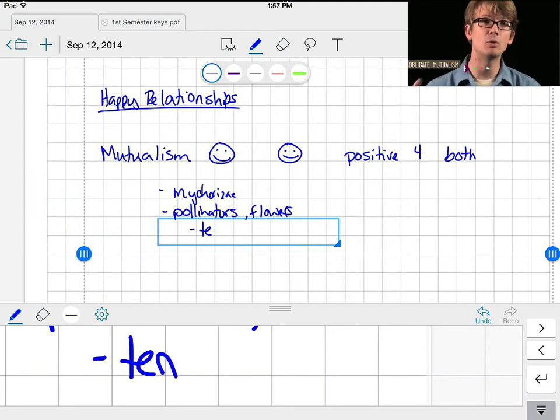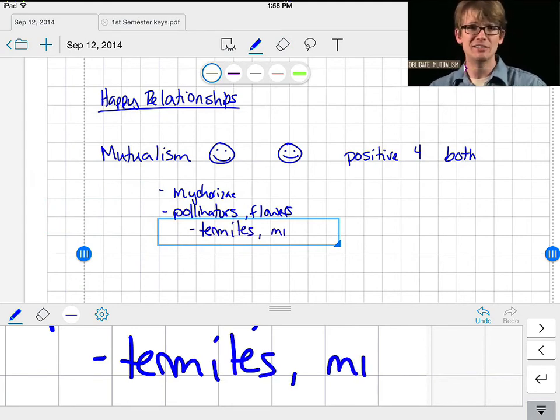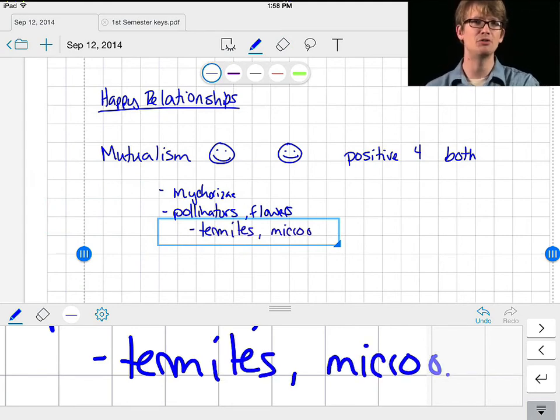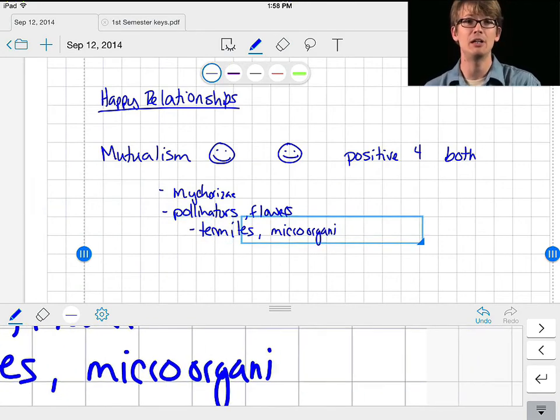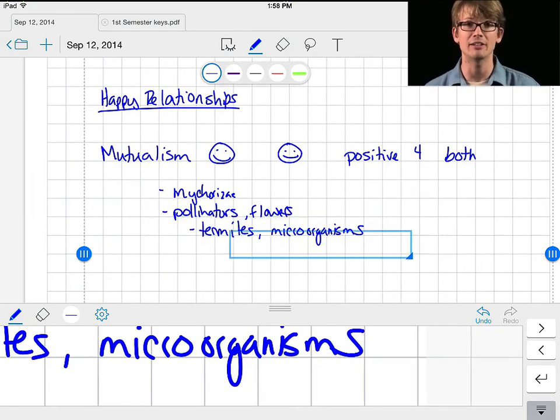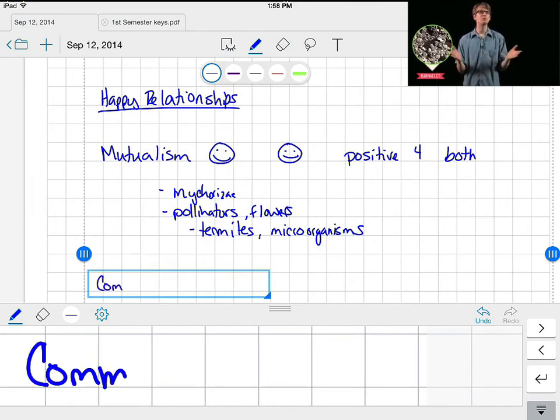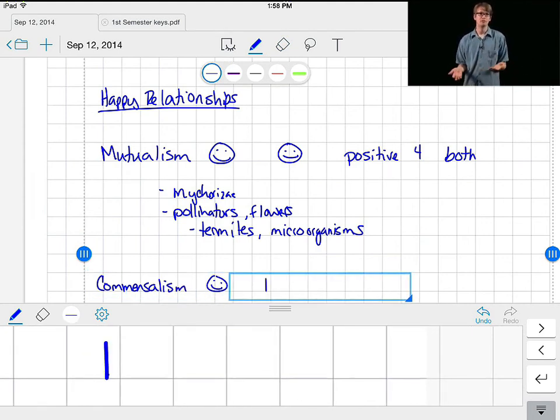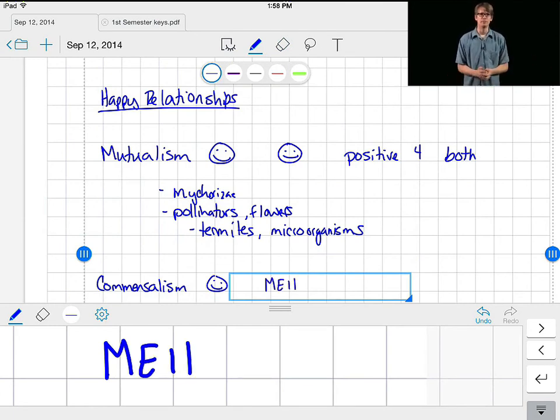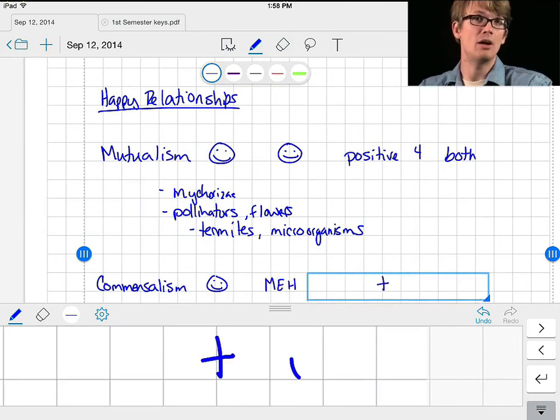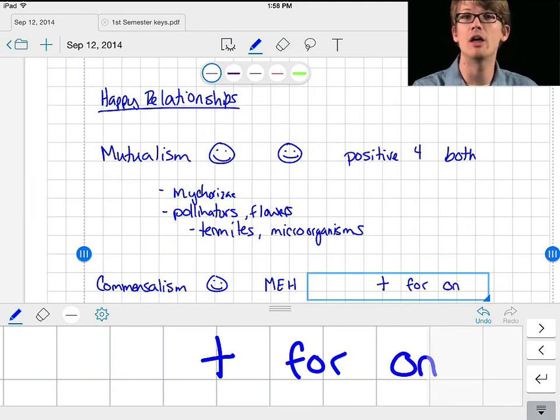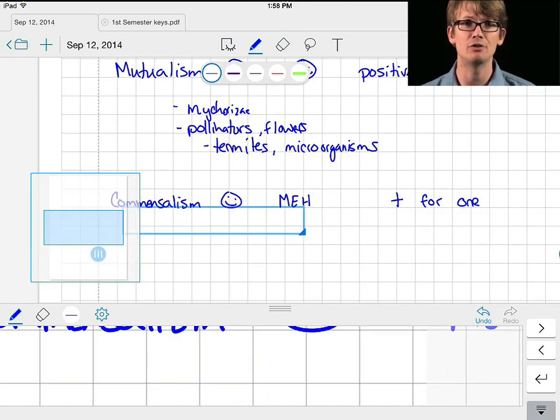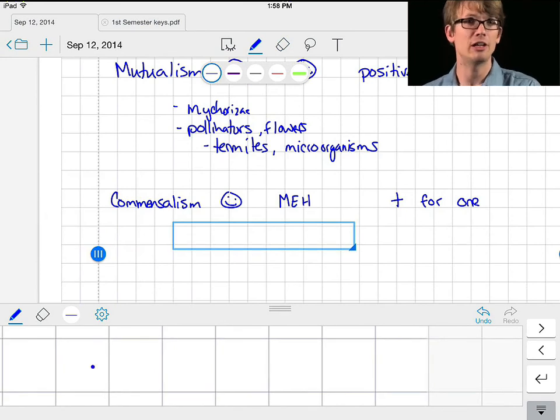By contrast, commensalism is where one species definitely benefits and the other isn't really hurt or helped. Such neutrality, of course, is difficult to prove, because even a seemingly benign interaction probably has some effect. Barnacles, for example, hitchhike on gray whales, getting a free ride through swathes of plankton-rich water for feeding. While clearly a benefit to the barnacles, the relationship is often considered commensal, because the whales probably don't really care whether the barnacles are there or not. Or do they? The barnacles might slow down the whale as it swims through the water, but on the other hand, they might also serve as a type of camouflage from predators like orcas, in which case they confer an advantage. So it probably comes down to meh for the whale.